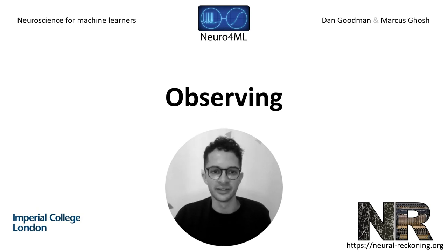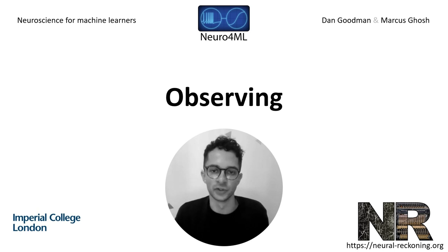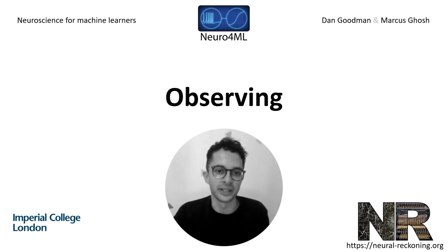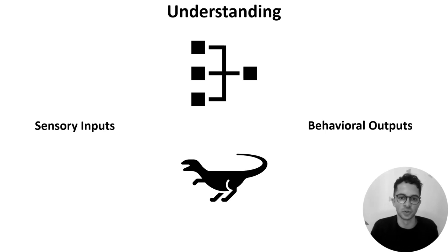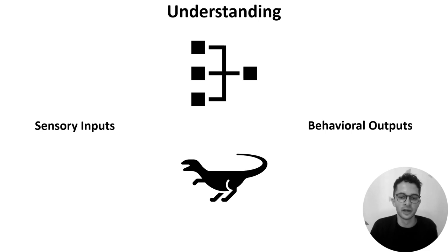This week we're going to explore how researchers try to understand neural networks. Let's think about what that actually means. We can think of both artificial neural networks and brains as computing input-output transformations from sensory stimuli to behaviour. But how do all of a network's features, like its unit properties, architecture and activity patterns, combine to implement these transformations?